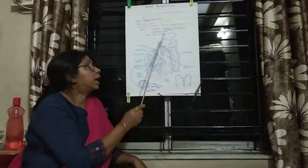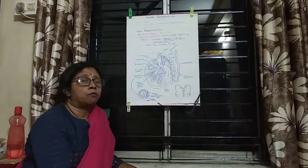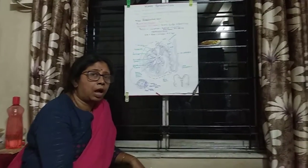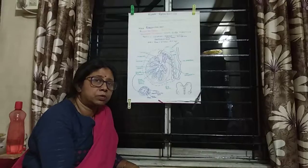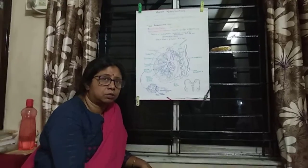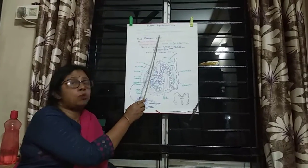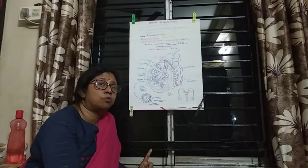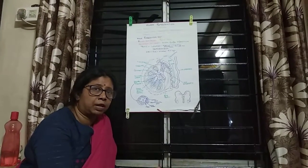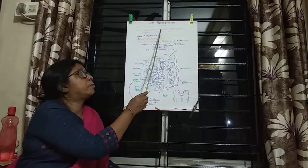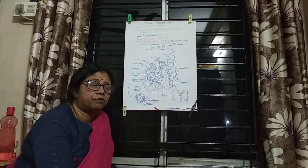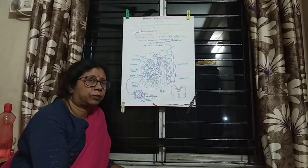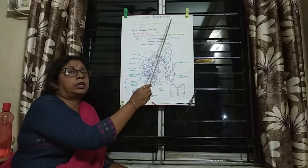There are certain stages of human reproduction. First is gametogenesis, which means the formation of the female gamete (ovum) and the male gamete (sperm). Since it is oogamy, the female gamete is non-motile, so the male gamete has to move to the female gamete. The transfer of the male gamete to the female reproductive tract is called insemination.